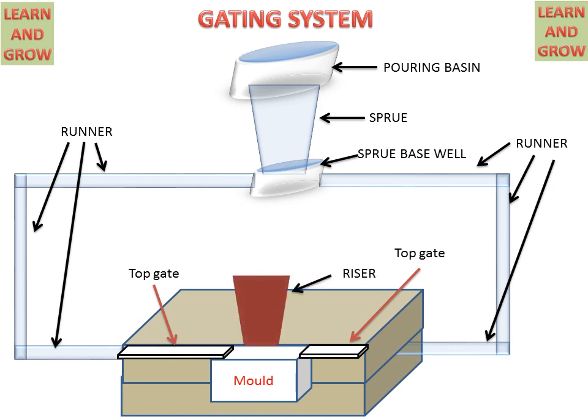This is the riser, which serves two purposes. First, it shows when the cavity is fully filled with molten metal. Second, it compensates for the shrinkage of molten metal as it cools and forms a product, by supplying molten metal back into the cavity.